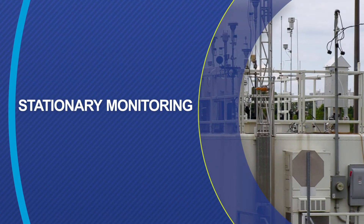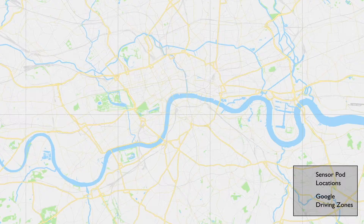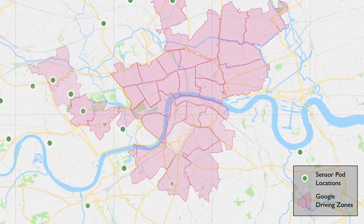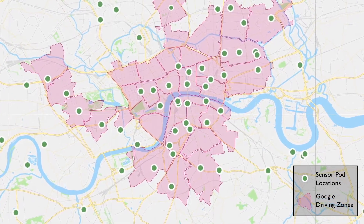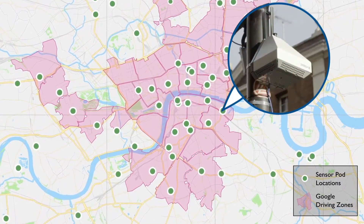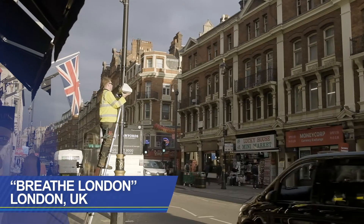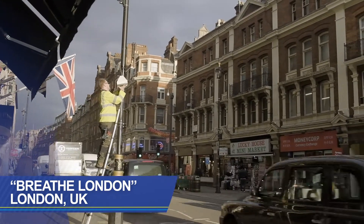Now, let's break down a few key differences between the two approaches, starting with the stationary approach. Stationary monitoring networks can collect data continuously and provide an effective way to measure pollutants 24-7 at a fixed location. Stationary monitors provide much higher temporal coverage.